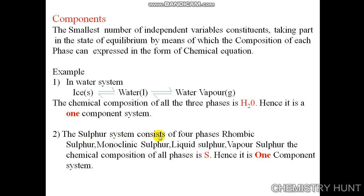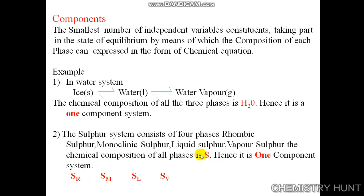The sulfur system consists of four phases: rhombic sulfur, monoclinic sulfur, liquid sulfur, and vapor sulfur. The chemical composition of all phases is sulfur (S). For monoclinic sulfur, rhombic sulfur, liquid sulfur, or vapor sulfur, we write only S. Hence it is a one-component system: rhombic is S, monoclinic is S, liquid is S, and vapor is also S. The chemical composition is S and the component is 1.